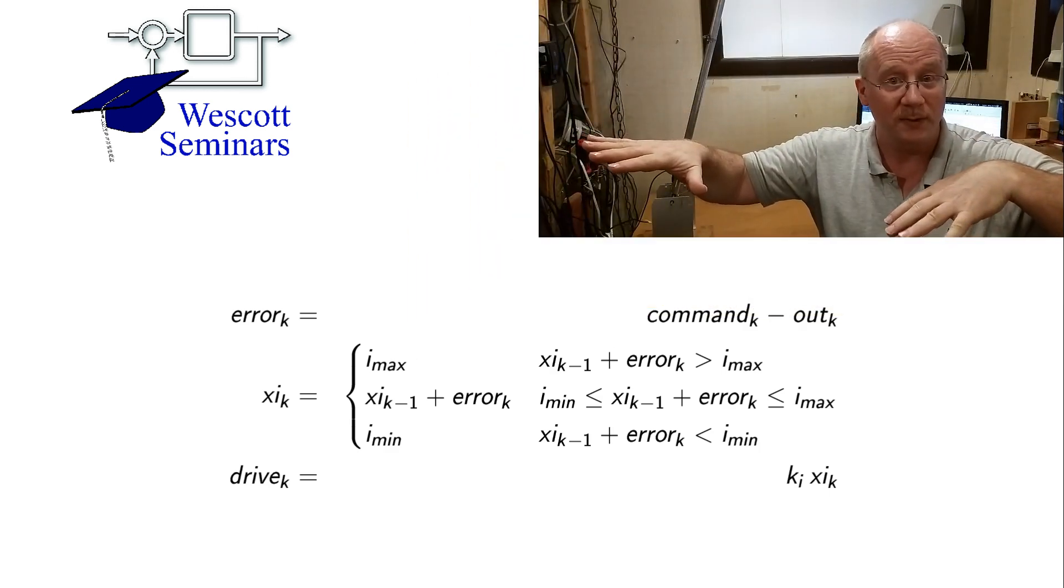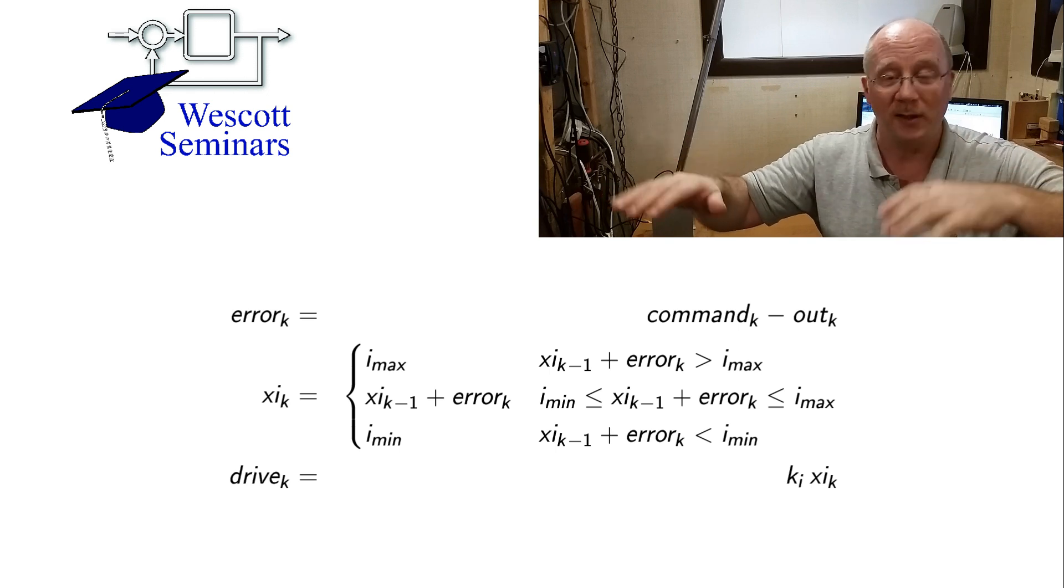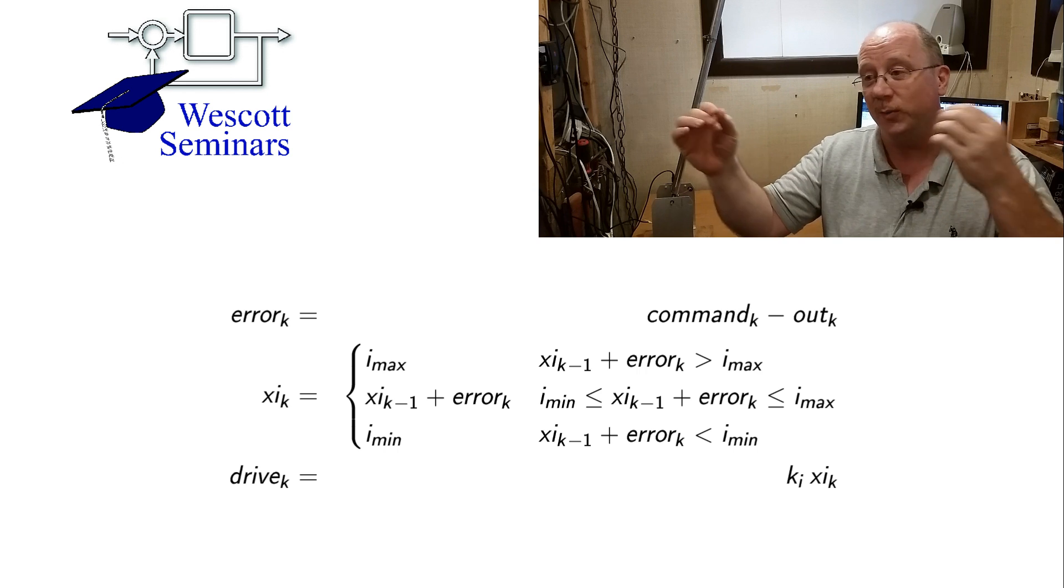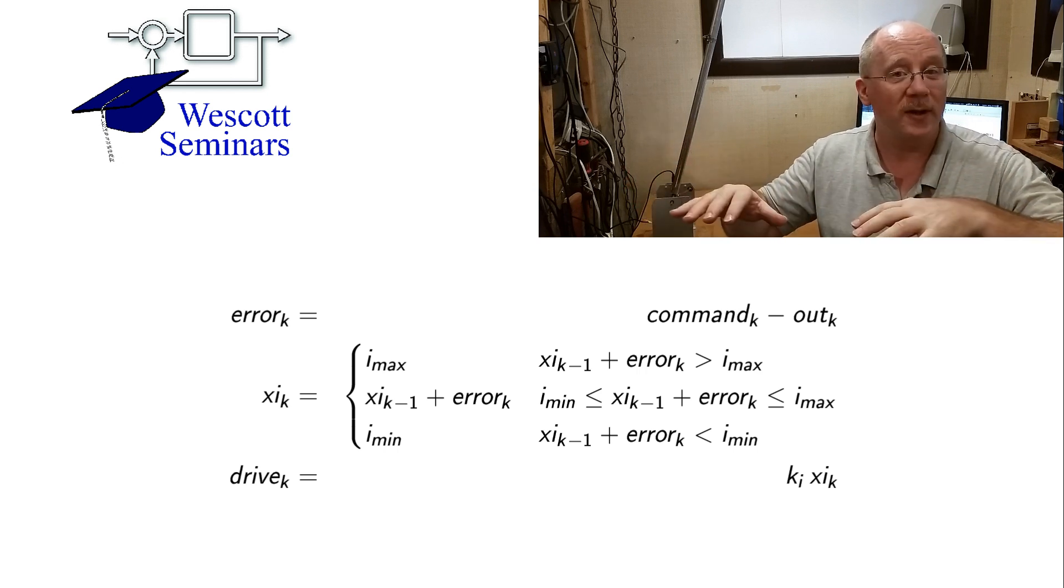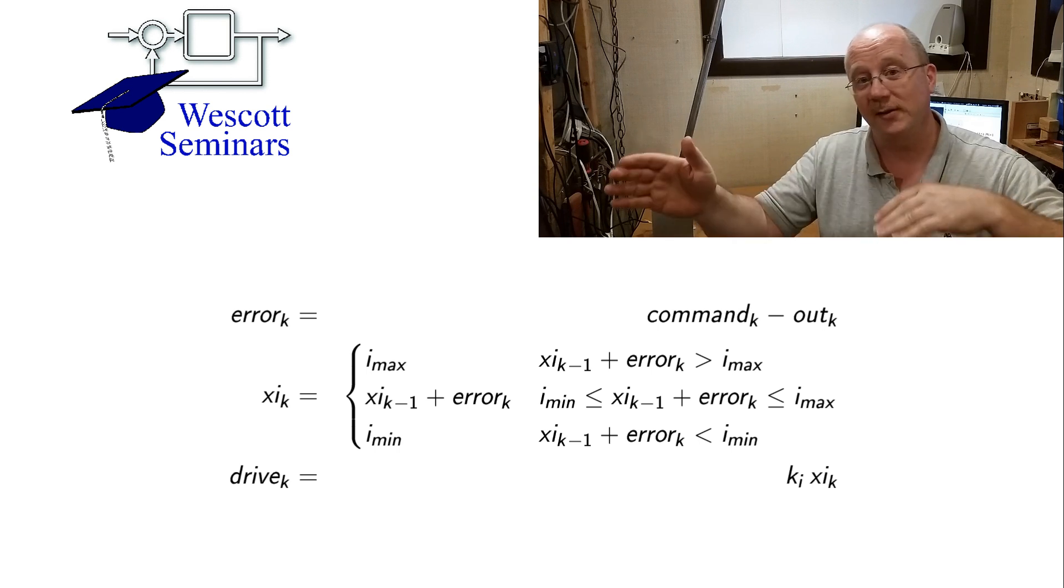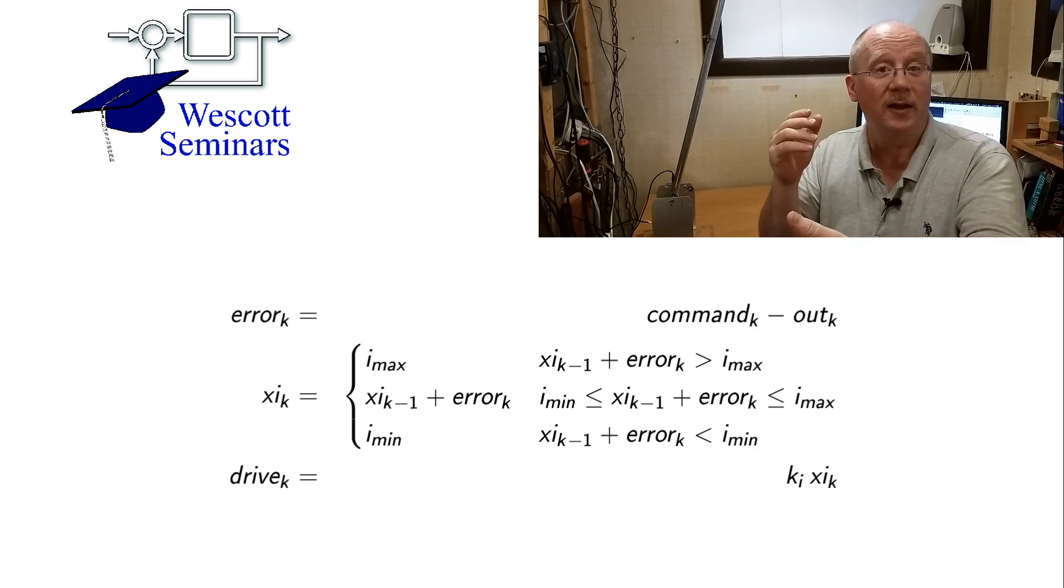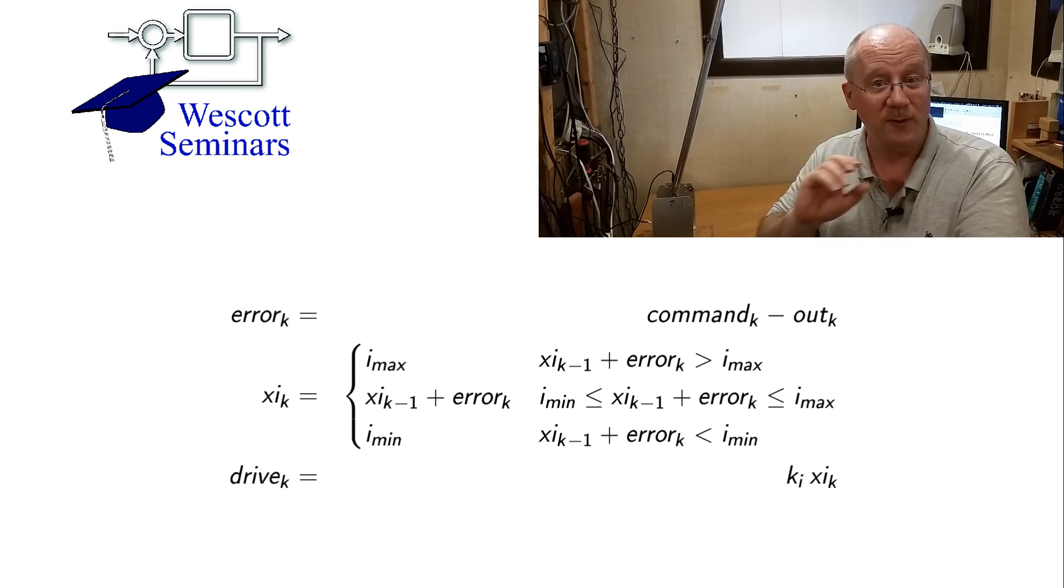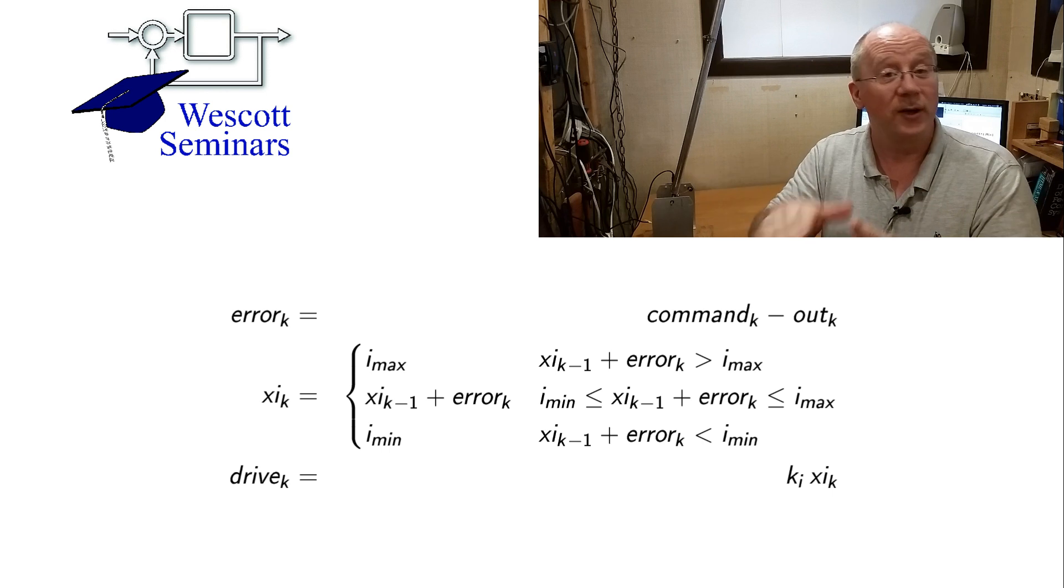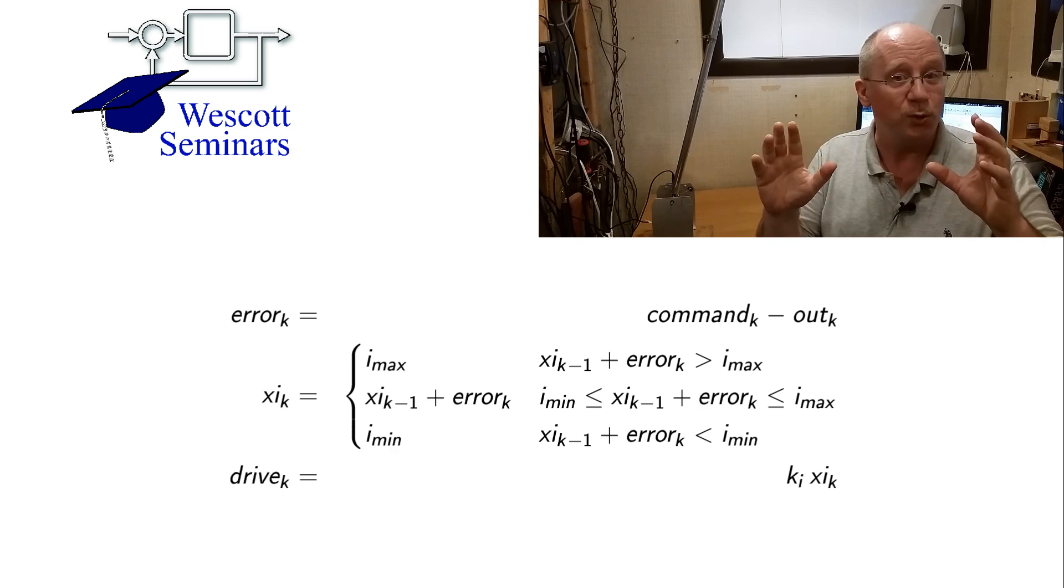Here's the algorithm for computing integrator control when you're using integrator anti-windup. Now this looks a lot more complicated, but basically, it's only the part in the middle that looks bad. So you're computing the error as usual, and then what that part in the middle says that as long as your integrator is not bumping into one of its limits, then just make it a normal integrator. So the way you implement an integrator is that you take the past value of the integrator and you increment it by your error. And then if that thing exceeds a limit, either high or low, then trim it to the limit. And then finally, send it out.